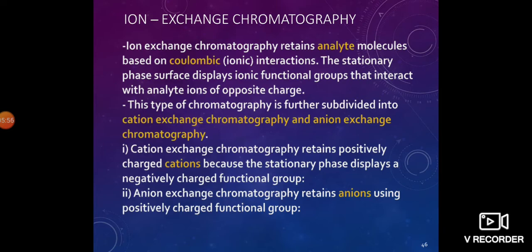Ion exchange resins are discovered as natural ion exchange resins and synthetic ion exchange resins. Natural ion exchange resins are solid matrices with ion exchange properties that occur in nature. For example, zeolite (sodium aluminum silicate), zirconium phosphate, and lignin, which is a cellulose polymer found in plants.